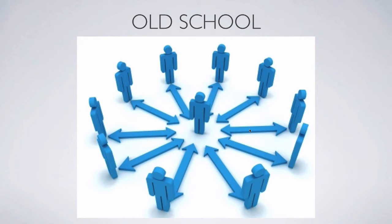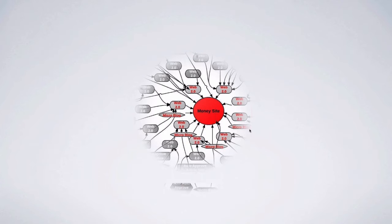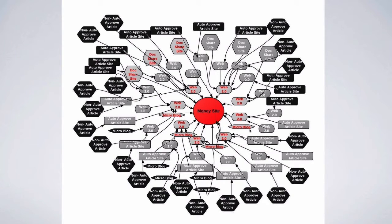Old school SEO would try to obfuscate the pattern by creating a much bigger link wheel. But even in sophisticated link wheels, everything still tends to cascade into a center target. There's really no links between the outer sites — just links driving inward to the center. It becomes a bigger construct of websites, but it's still old school and still easy for Google to see that everything points inward to the money site.